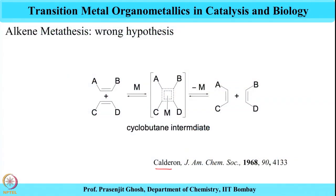Let me recapitulate what we had discussed in the earlier class. We had spoken about a mechanism by Calderon, published in 1968, that speaks about the presence of a cyclobutane intermediate. However, this pathway was deemed not true because there was no evidence of formation of any kind of cyclobutane during the olefin metathesis reaction. What it says is that two different olefins A and B react in the presence of M to give a metallocyclobutane coordinated to M, and then the metathesis reaction happens, releasing M to give the cross-metathesis product.